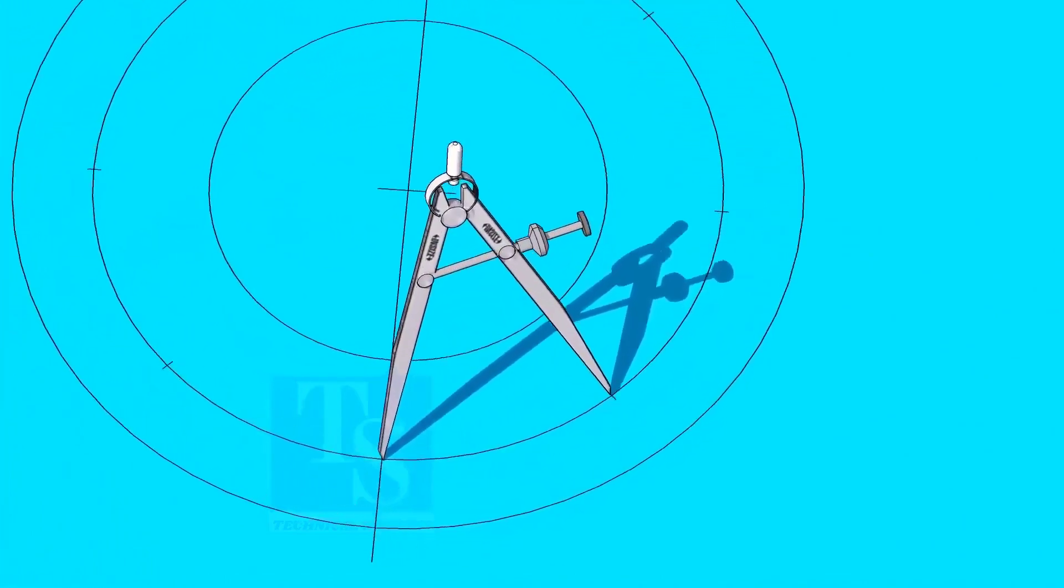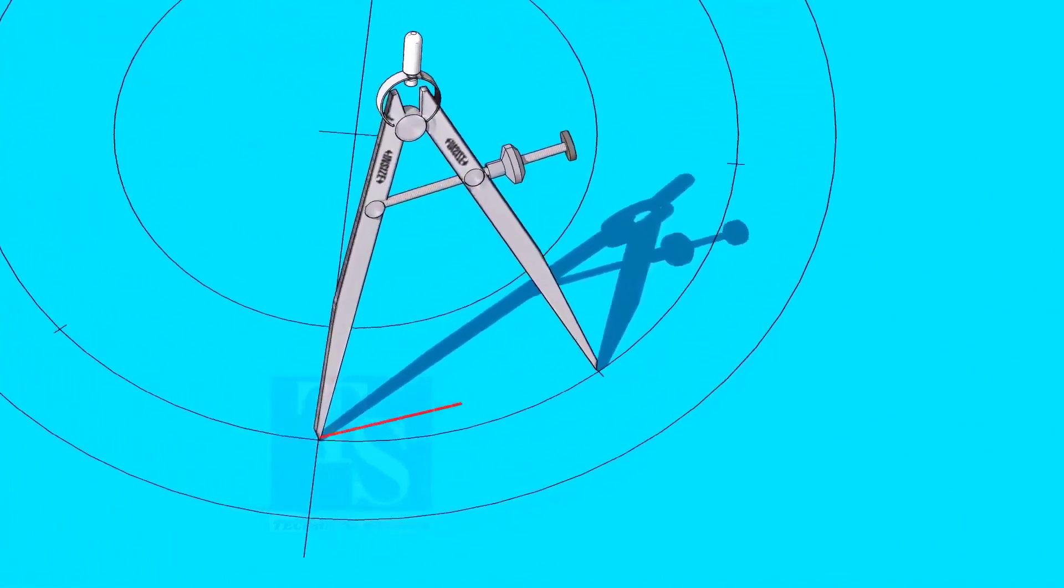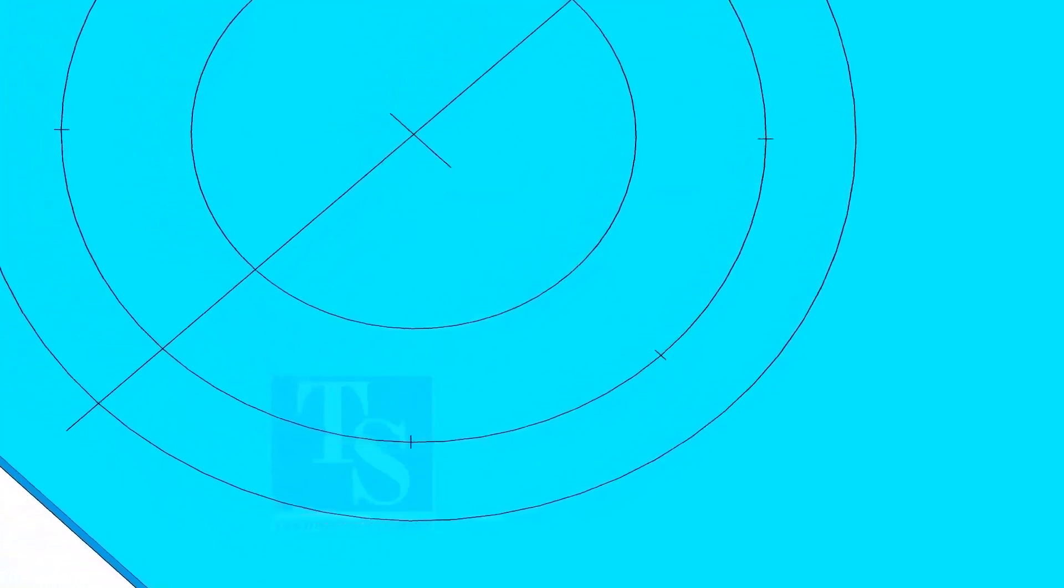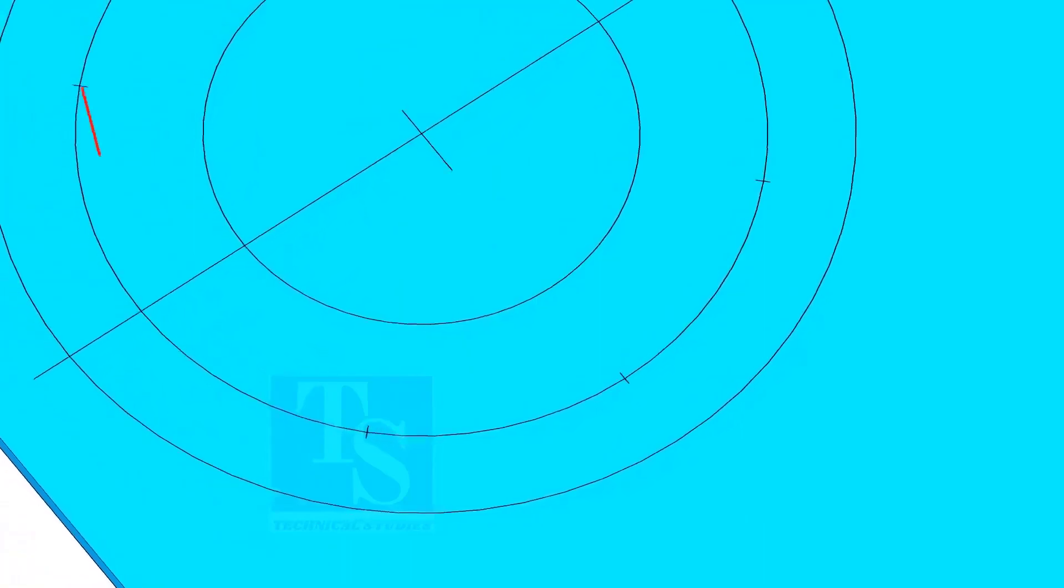Now divide the PCD into 8 parts. Dividing the circle is not an easy job. It requires good practice. Make sure the last segment is the same as the other segments.